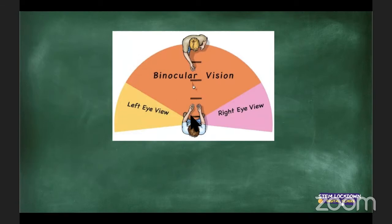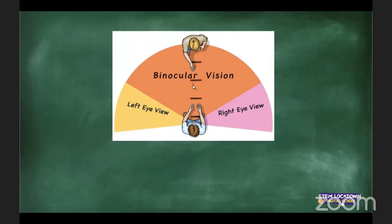If someone throws a ball at you and you close one eye, it will be very difficult to catch. With both eyes open it's much easier, because binocular vision helps with depth perception and judging distance.